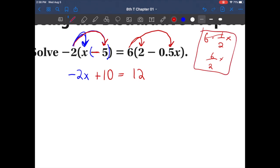6 times 0.5x is going to give you negative 3x. Now all we need to do is combine like terms. Well let's see, we have an x over here and we have an x over here. Let's start with those ones first. How about we have this move to the other side? I like to have my variables be positive.